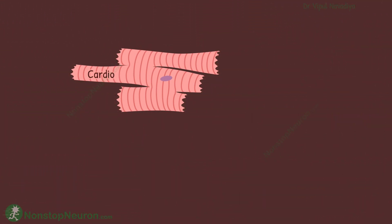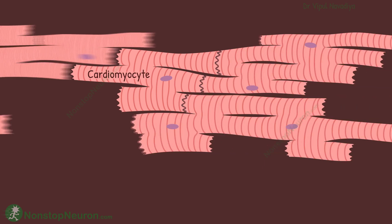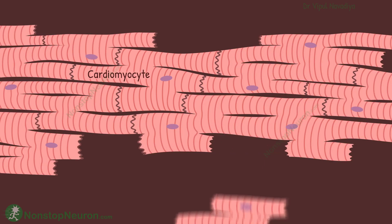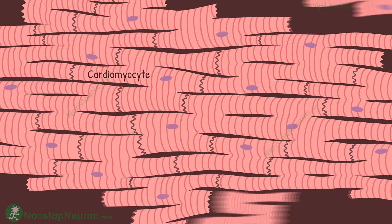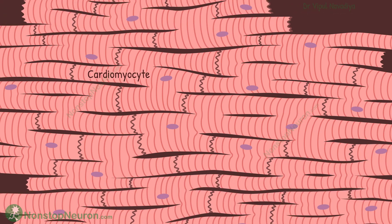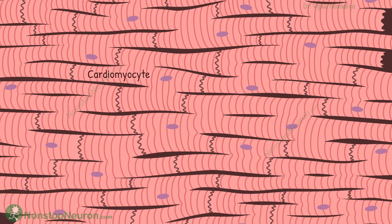The individual cell in the cardiac muscle is called a cardiomyocyte. They are arranged in series and parallel to each other, forming a network in which the fibers branch and combine. The cells are connected to each other at intercalated discs.